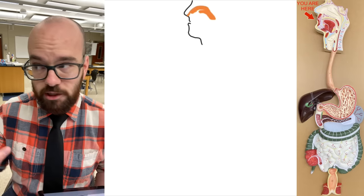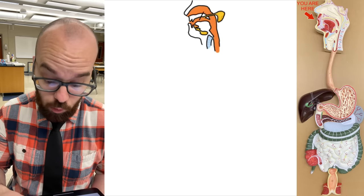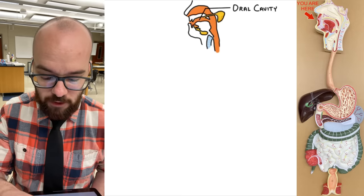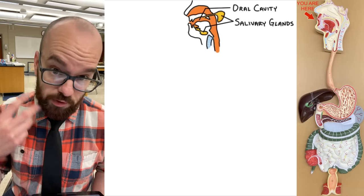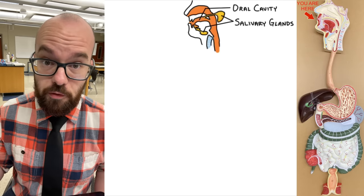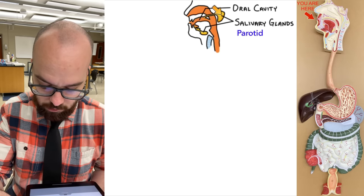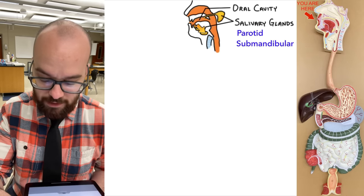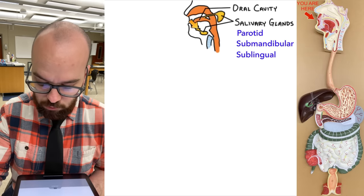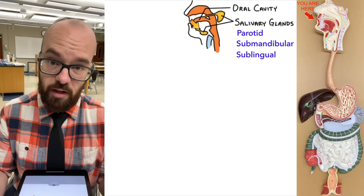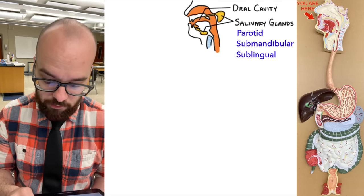Let's jump to the whiteboard. We start at the beginning — we eat food and put it into our mouth, or oral cavity. Connected to the oral cavity, I've got these three glands in yellow. These are called the salivary glands, and they produce enzymes which help break down the food we start chewing. There are three salivary glands: the parotid gland, the submandibular gland — because it's under your mandible or jawbone — and the sublingual gland, which is under your tongue. All three produce our saliva.